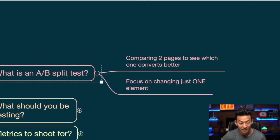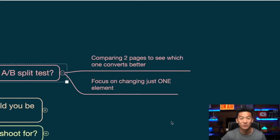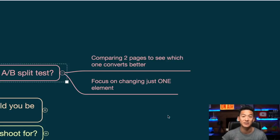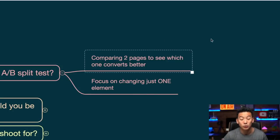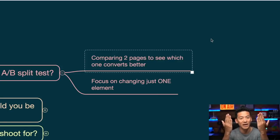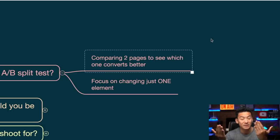An A-B split test is very simple. You should be split testing everything — your email subject headlines, your landing pages, your sales pages. Depending on what you're trying to do, there is an A-B split test for everything. But all it really is is you're just comparing two pages to see which one converts better. You compare one version with another version, and the one that beats out the other one, you keep that as a control. Then you create a new split test and just continue to try and beat that control.